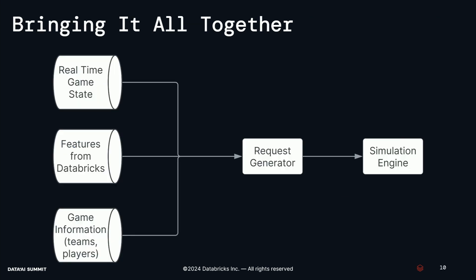To bring it all together: we have incoming data sources — the real-time game state, third-party data feeds telling us what's just happened in the game, our features from Databricks (player and team ratings made available in Kafka), and some slower-moving static data like game information, which teams and players are involved, and injury news. Our request generator aggregates this data and sends requests to our model. Our model performs the Monte Carlo simulation loop making all those machine learning model predictions, and from the output we aggregate to the betting markets we need.